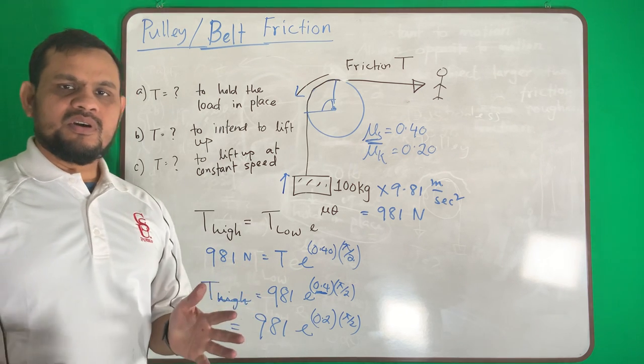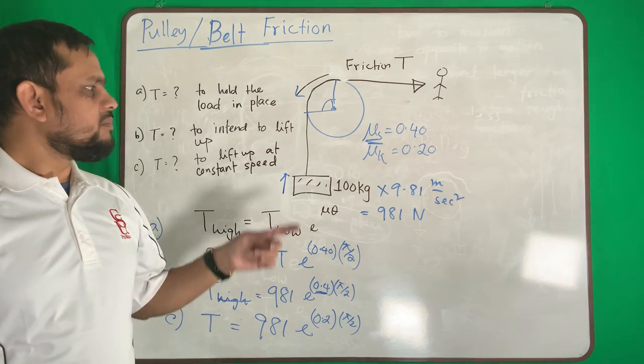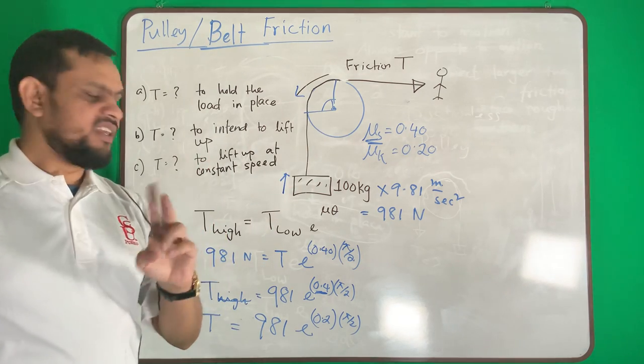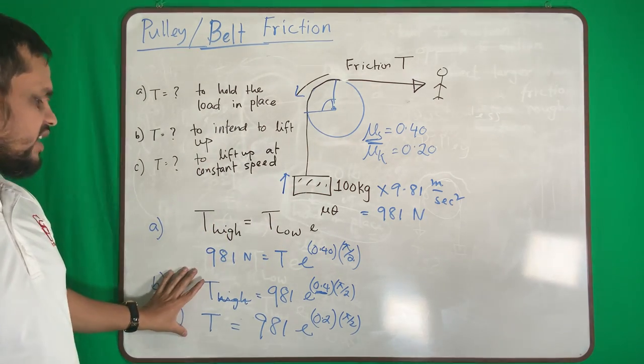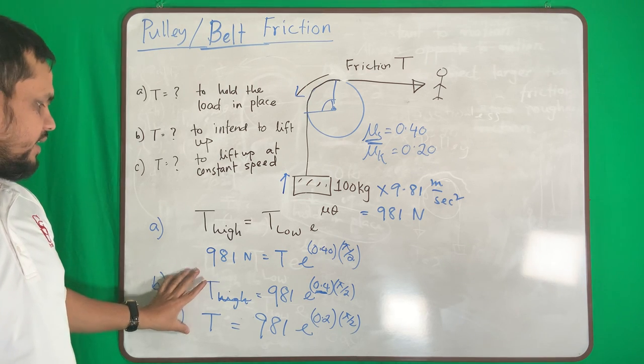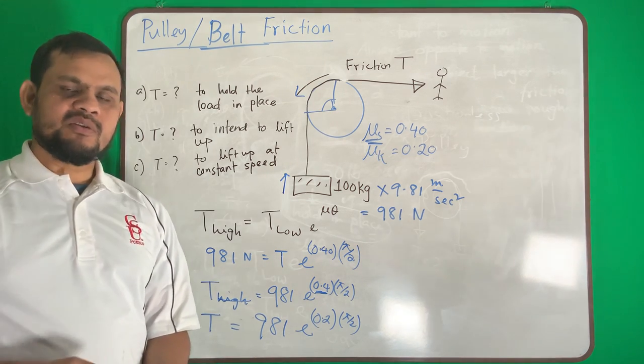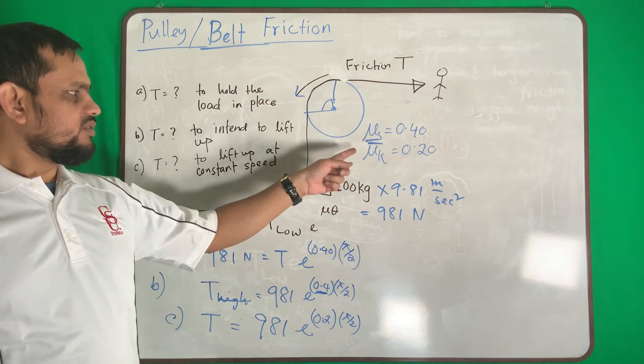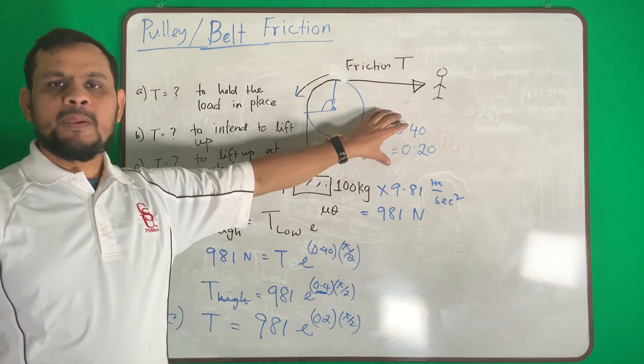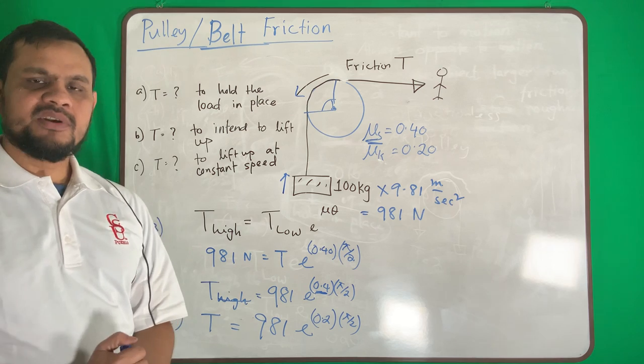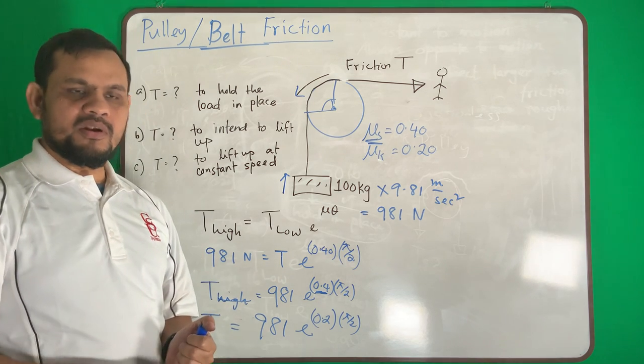Sometimes in your book or in your exam they may not give you two values. In that case these two will be actually the same: to intend to lift up or to lift up at constant speed, both cases will be the same if you have only one value.